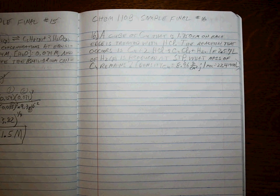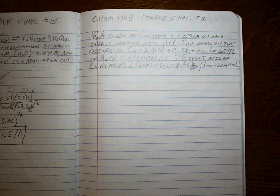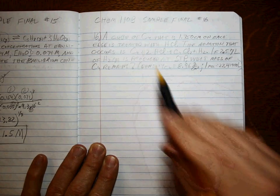Chem 110B sample final number 16. We could also say Chem 110A sample final number 8, or on your final exam, number 8, because we did this exact same kind of problem, a cube of copper.